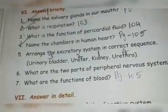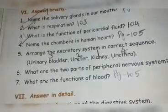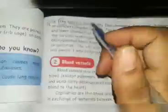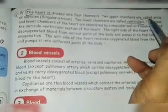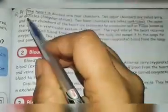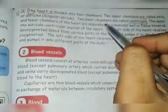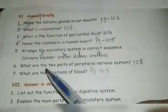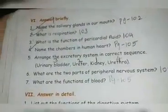Fourth question: name the chambers in the human heart. Page number five. The heart is divided into four chambers. Two upper chambers are called atria or auricles. Two lower chambers are called ventricles. Write the answer up to ventricles.